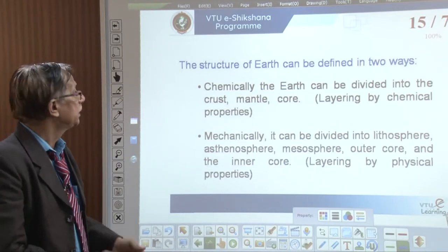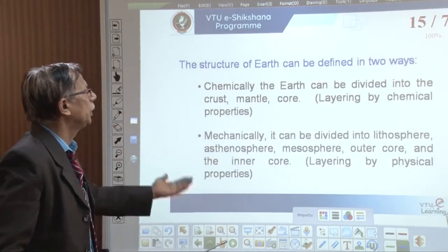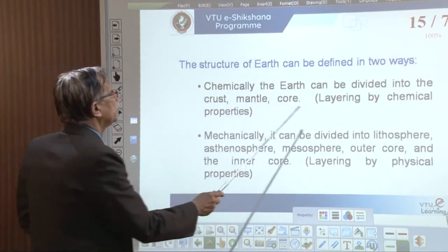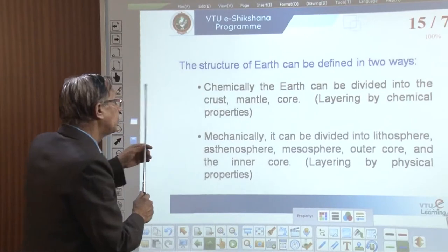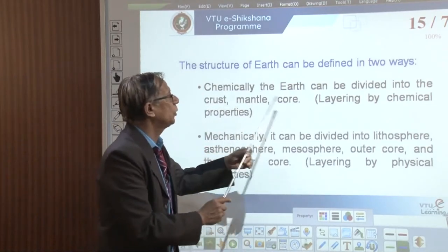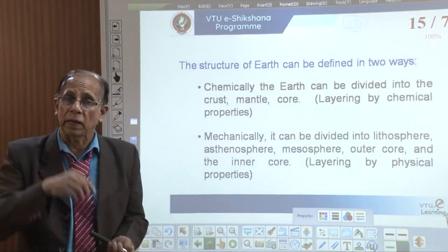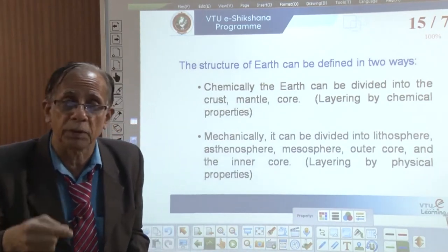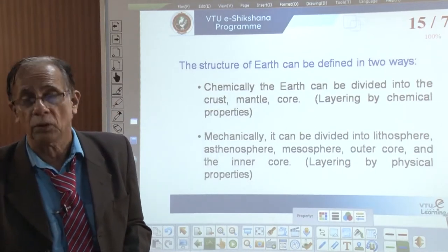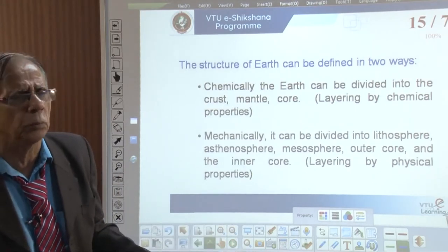Scientists study the earth in two ways depending on their interest. Chemically, earth is divided into the crust — the topmost silicate layer — then the mantle, and then the core. This chemical layering has important implications for earthquake activity, volcanism, plate tectonics, and resources.